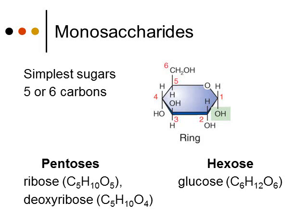If you look at the diagram on the slide, we have a 6-carbon ring. The carbons are numbered in the red numbers, so you're going to have 1, 2, 3, 4, 5, 6 carbons.